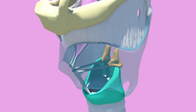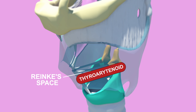Tumours on the vocal cords can spread to the thyroarytenoid muscle early, which sits in Reinke's space. Reinke's space is located below the vocal cord and allows vibration, readily assisting phonation. When cancer invades this, it causes problems with the mobility of the vocal cord.